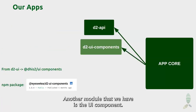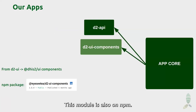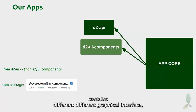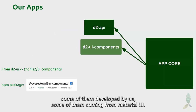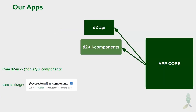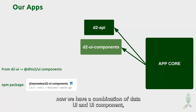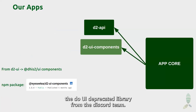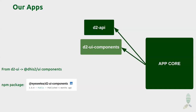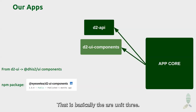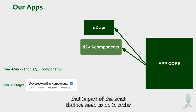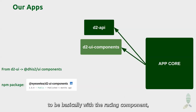Another module we have is D2 UI Components, also on NPM. This module contains different graphical interface components — some coming from the DHIS core team, some developed by us, and some from Material UI. Right now we have a combination of D2 UI and UI Components. D2 UI is the deprecated library from the DHIS core team, and we only have two components left to migrate to UI: the Org Unit Tree and the multi-selector panel.